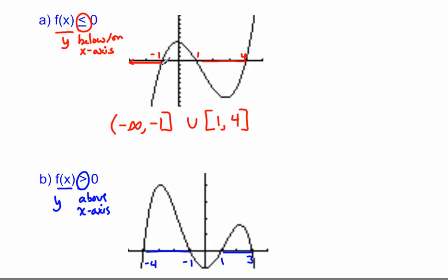So the sections we want are negative infinity up to negative 1, including it, because of the or equals, union 1 to 4, again, including those endpoints.